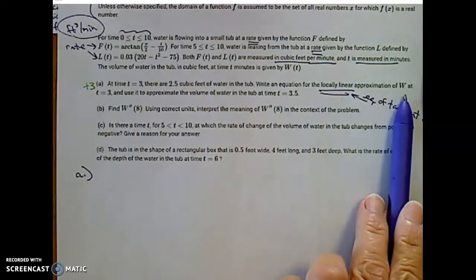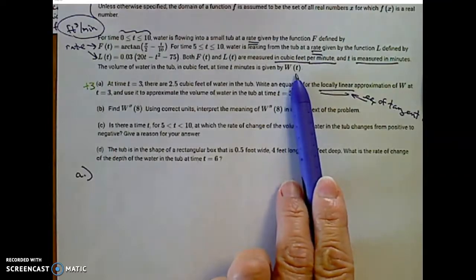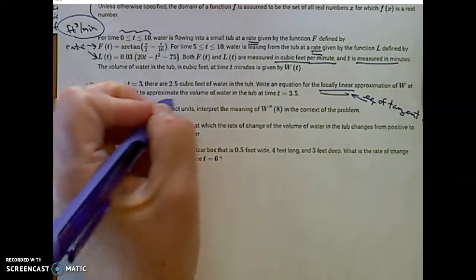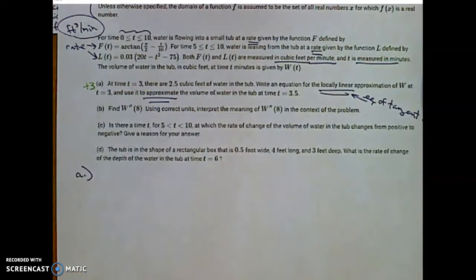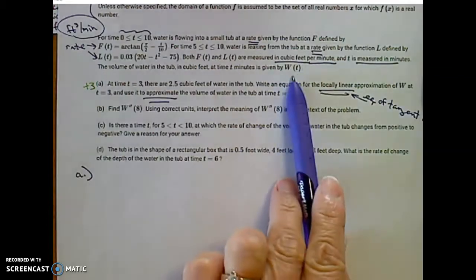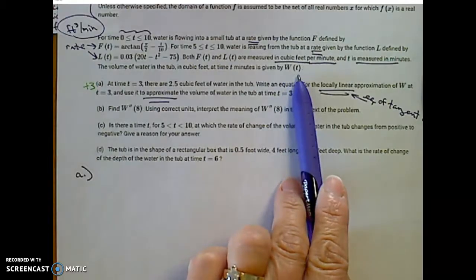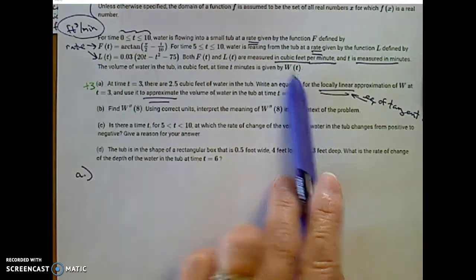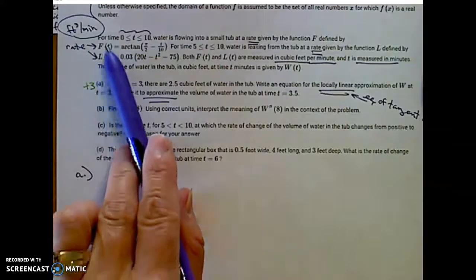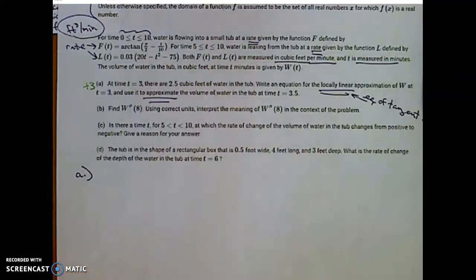Remember that's an equation of the tangent line, and then we can use that to approximate. Equation of a tangent line of w at t equals 3, and then use the line to approximate the volume in the tub at time 3.5. What I notice is that w of t is the volume in the tub at any moment.